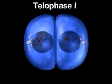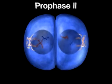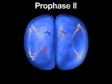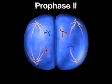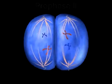The second division of meiosis now proceeds. During prophase II, a spindle forms in each of the two new cells.